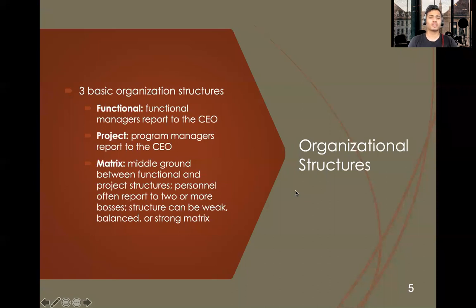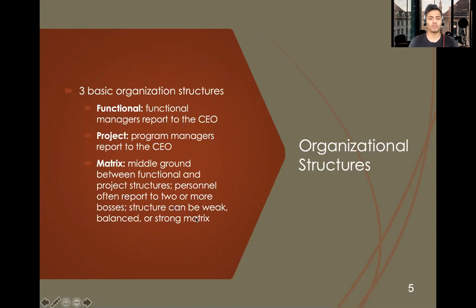The three basic organizational structures are functional, project, and matrix. In the functional structure, managers directly report to the CEO. In the project structure, the program manager reports to the CEO. In the matrix structure, which is the middle ground between functional and project structure, personnel often report to two or more bosses. The structure can be weak, balanced, or strong matrix — that is, the report passes through different levels of the organization before reaching the CEO.